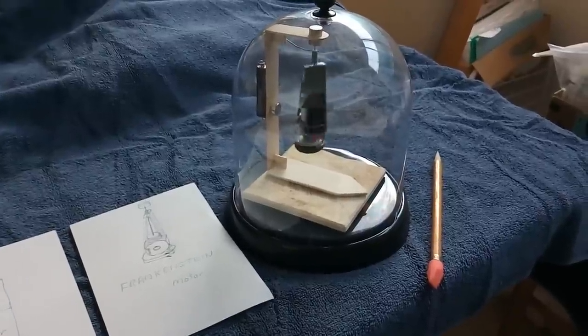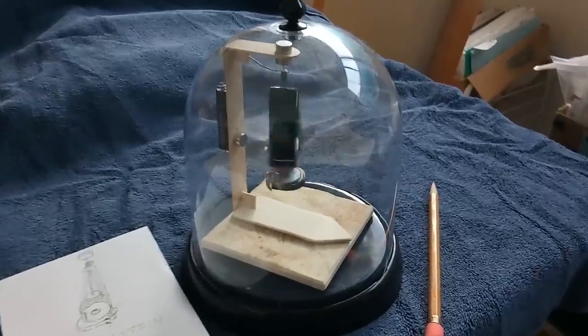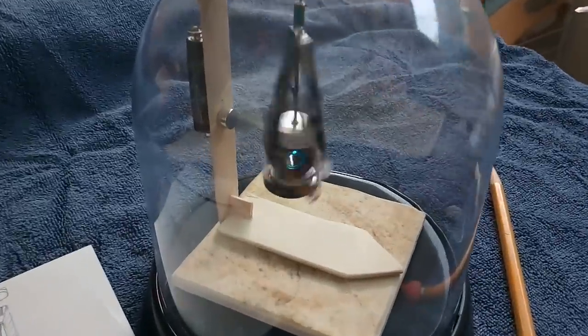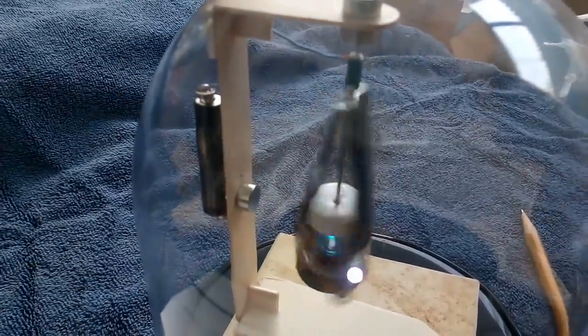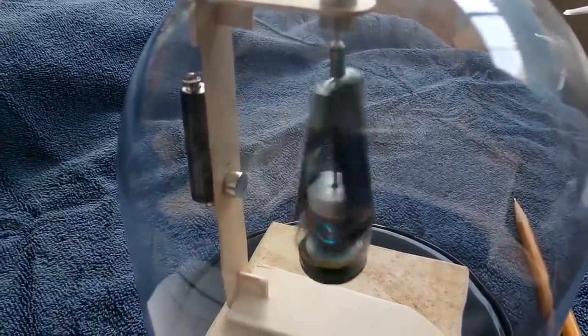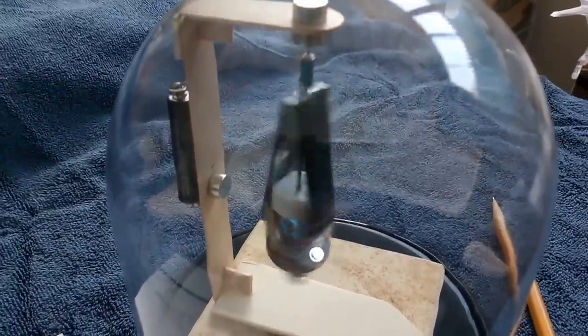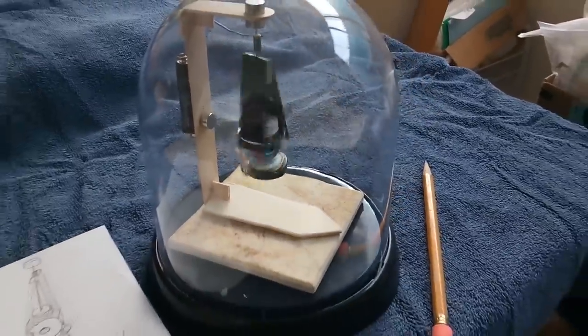Okay, this is my Frankenstein motor under glass. It's working on the battery right now. There is some sun coming through the window—it's late afternoon—but that shows you what's going on under glass right there.